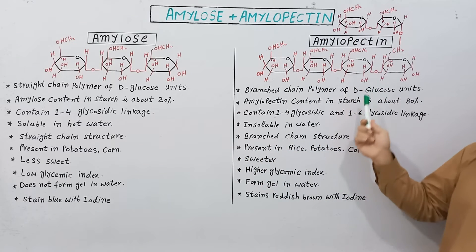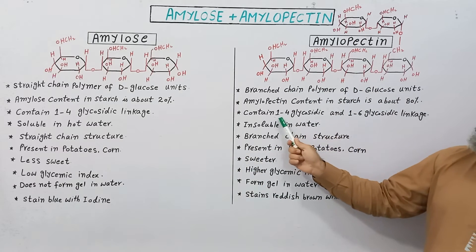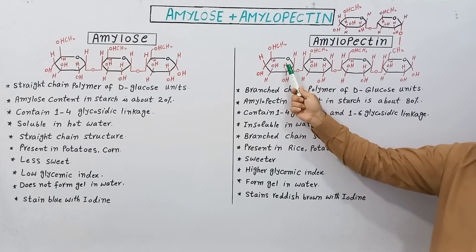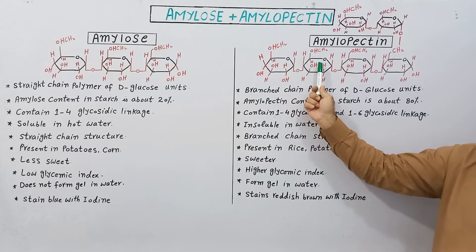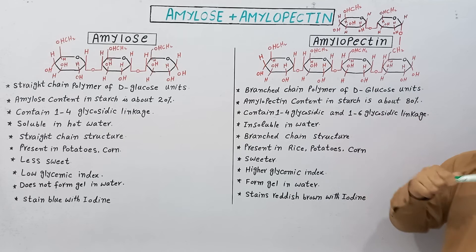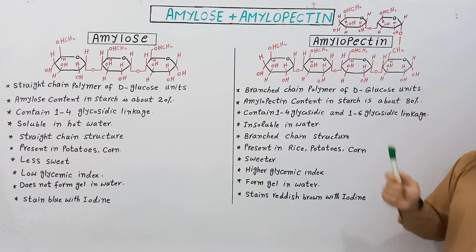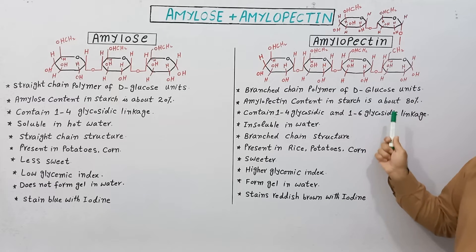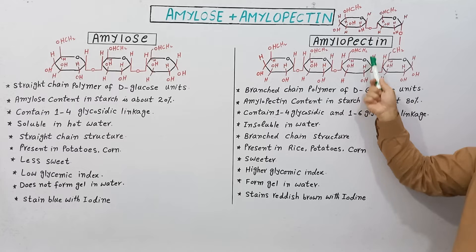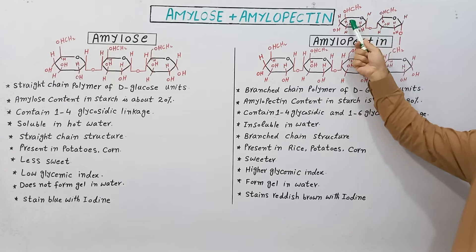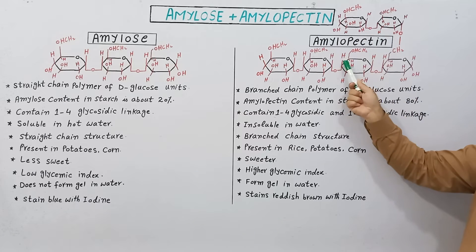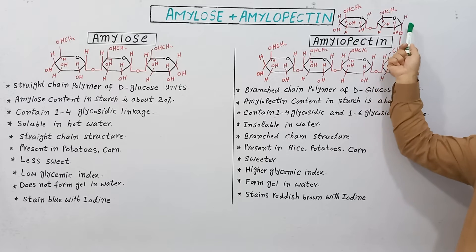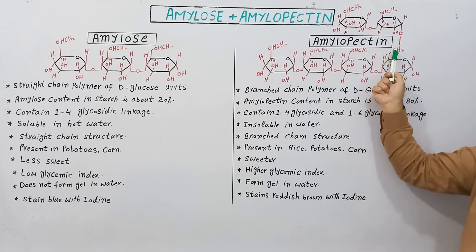Amylopectin starches also contain the alpha 1-4 glycosidic linkage to join glucose molecules, but there is one additional bond known as the alpha 1-6 glycosidic linkage, which joins two chains of glucose together. As shown, one chain and another chain are linked at the one and six positions of the glucose molecules.